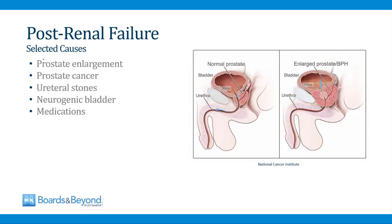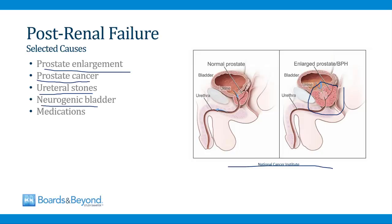Some selected causes of post-renal failure include: prostate enlargement in men, which causes urine to have difficulty leaving the bladder and can back up into the ureters and ultimately the kidneys. The same thing can happen with prostate cancer. Stones can form and obstruct the ureters, and if both ureters are obstructed, or if outflow from the bladder is blocked, this can lead to post-renal failure. Neurogenic bladder — when nerve damage causes inability to empty the bladder — will also cause post-renal failure.